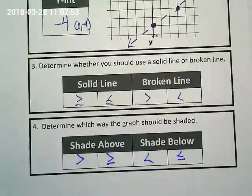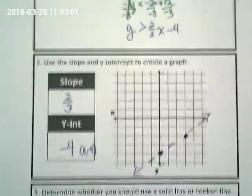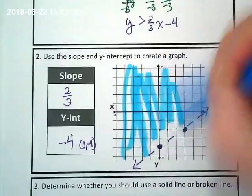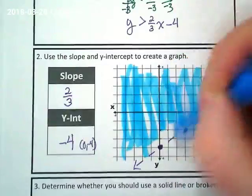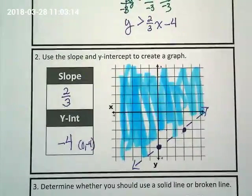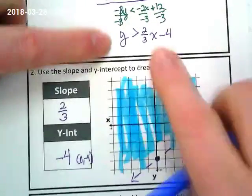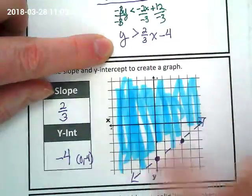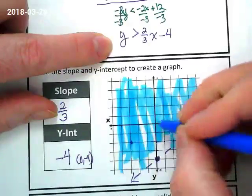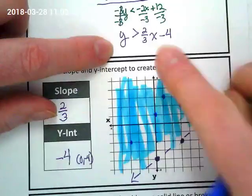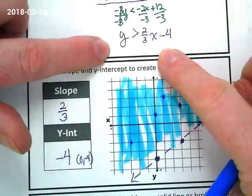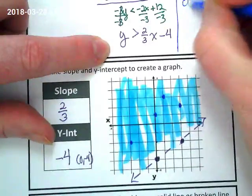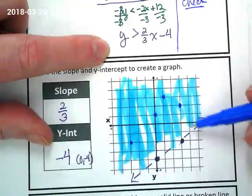And we're shading above. Now, you guys just have a pencil. I'm going to use a highlighter. It does not have to be totally shaded in. You just kind of want to draw that this is the direction. Oh, I get it. That's what I mean by shading. Now, why am I doing that? Because my equation is y is greater than 2 3rds x minus 4. This is where the line is. Because any ordered pair up here could go into your x, y here and make this inequality true. So, we're going to check it.